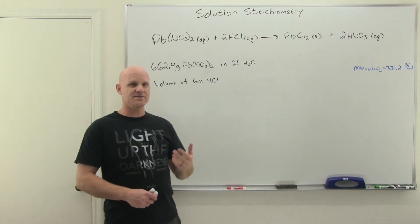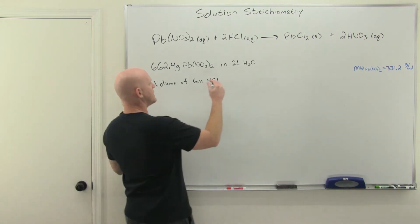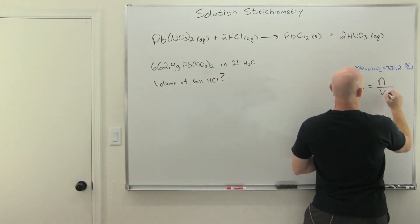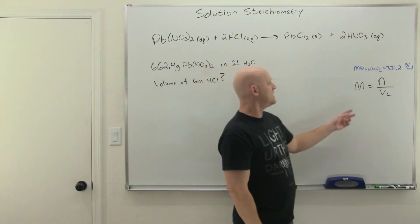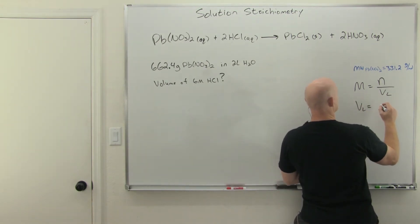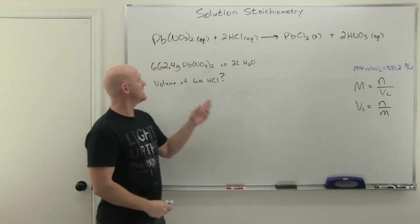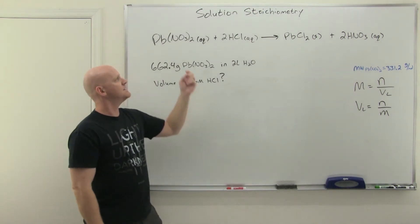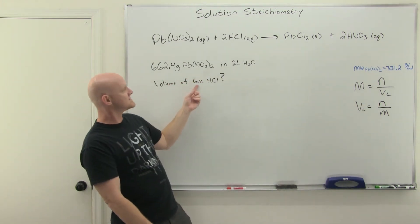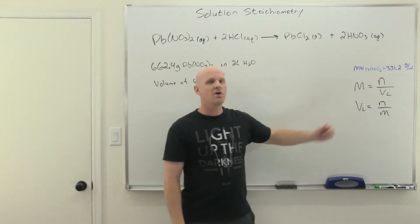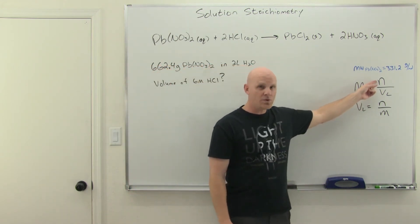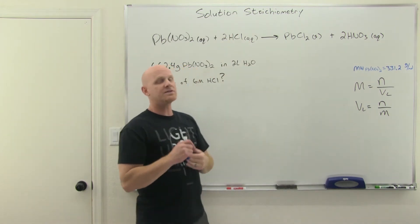Because we ultimately want the volume of HCl rather than its moles, and molarity relates moles to volume, we can rearrange molarity = moles/volume to get volume = moles/molarity. So the plan is: convert grams of lead nitrate to moles, use the 1:2 ratio to get moles of HCl, then divide by the 6 molar concentration to get the volume. That's solution stoichiometry.